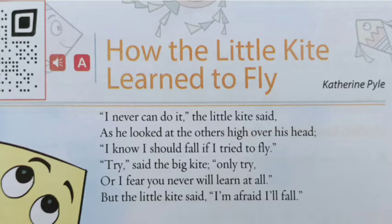Here the little kite is very afraid when he saw the other kites flying over his head. He still didn't want to try to fly. He said that he is afraid he would fall if he tries to fly high in the sky. Actually, the little kite is pessimistic and short of confidence as he is so afraid that he didn't want to try. But the big kite wanted to motivate him, encouraging the little kite by saying, 'Try, only try again and again. If you won't try, you will never learn to fly at all.' The big kite wanted the little kite to overcome his fear.